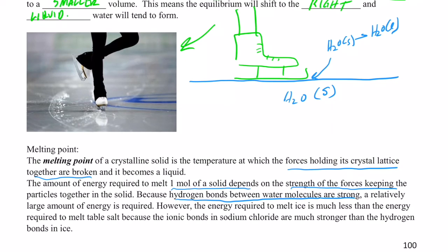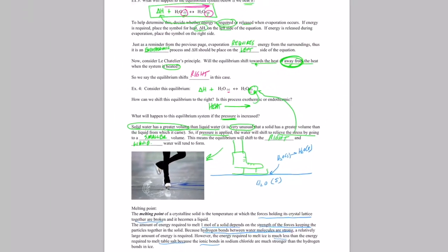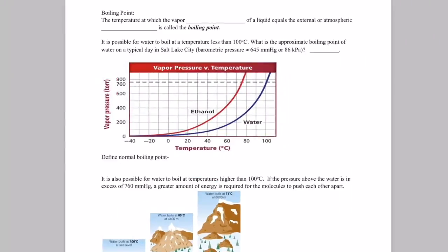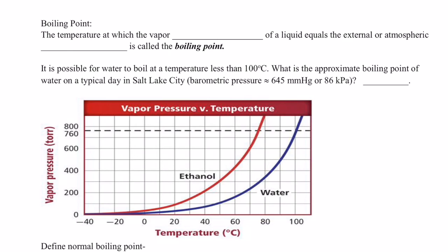However, the energy required to melt ice is much less than the energy required to melt table salt. What does that tell you about the bonds that hold the ions sodium and chloride together within the crystalline lattice of table salt? That must be a very, very strong force — even stronger than hydrogen bonding. So ionic bonds in sodium chloride are much, much stronger than the hydrogen bonding between water molecules in ice.